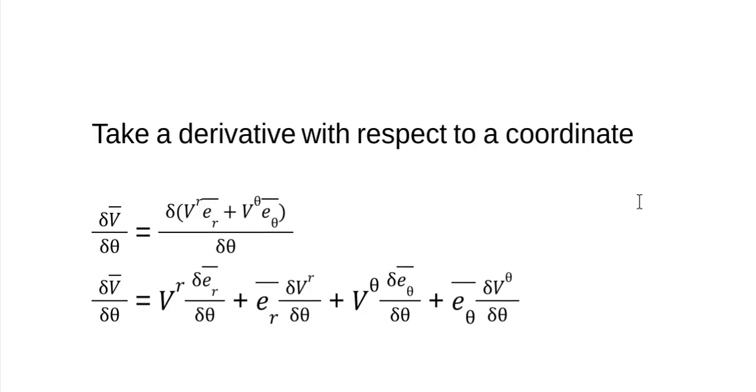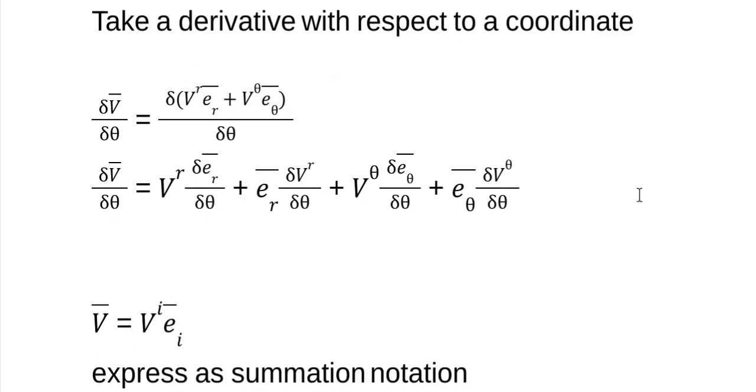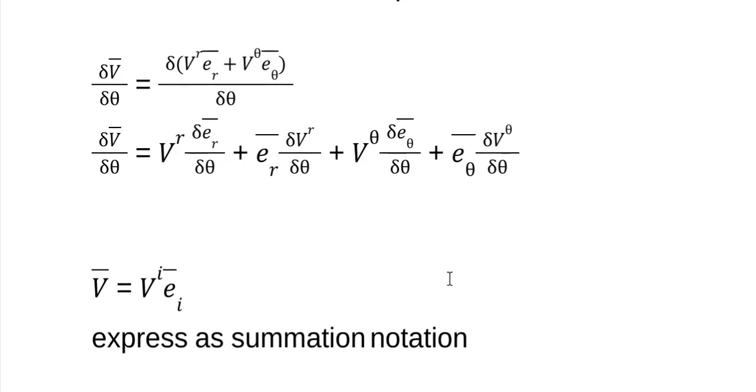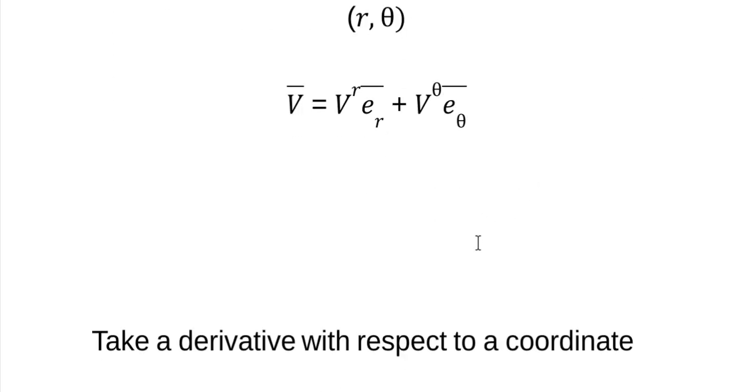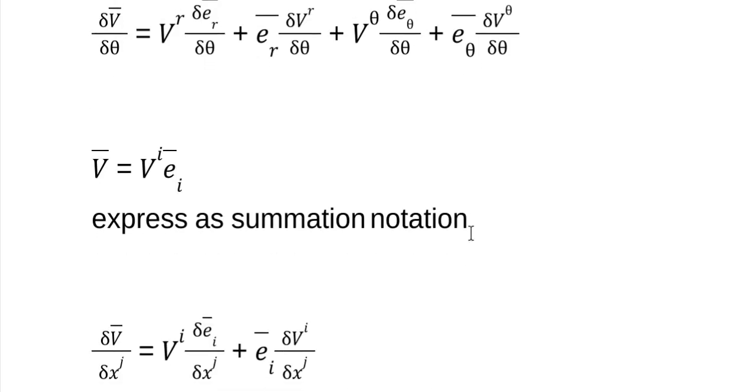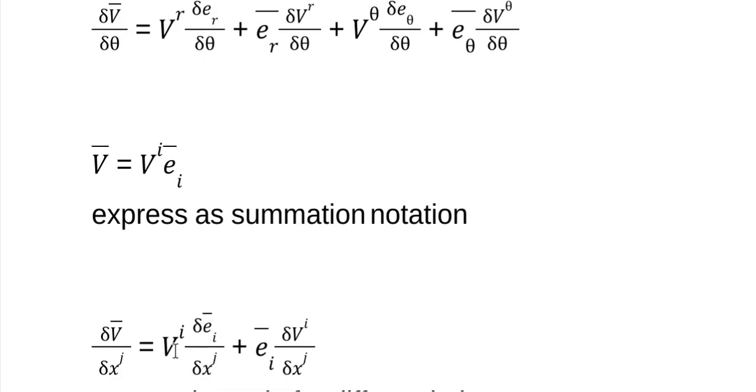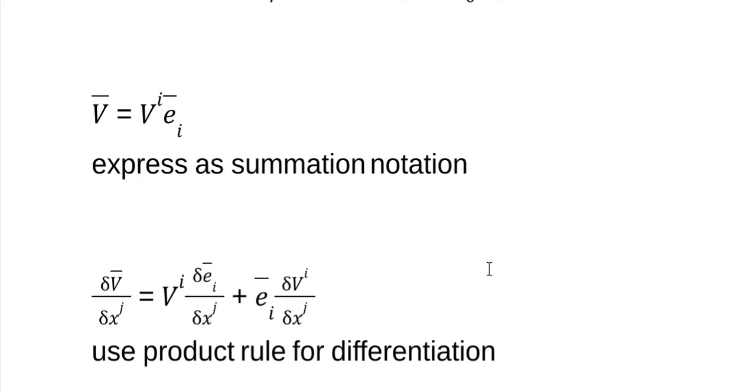I'm going to switch to the summation notation. So what this means is that when you see an index upper and lower, it implies there's a summation symbol here. So you're summing over however many dimensions you have. So we're in two dimensions, so we're going to have two terms here, just like it was here. That's all it means. So let's take the derivative of that, it's the same product rule, first times derivative of the second plus the second times derivative of the first.